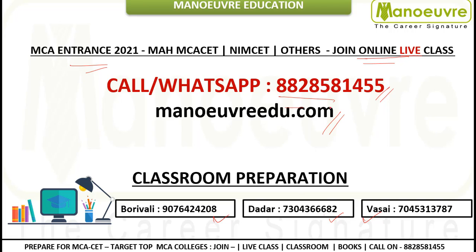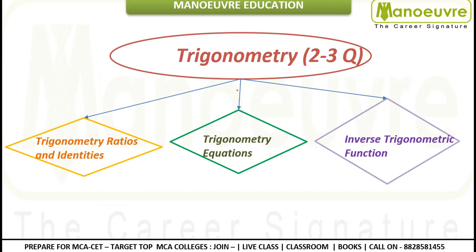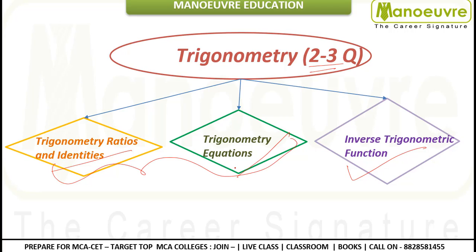In MCA, there are two to three trigonometry questions which appear every year. These questions are broadly divided into three topics: trigonometric ratios and identities, trigonometric equations, and inverse trigonometric ratios. The major chunk of questions comes from trigonometric ratios and identities, and trigonometric equations. Sometimes questions from inverse trigonometric ratios also appear. In this video, we will discuss trigonometric ratios and identities.